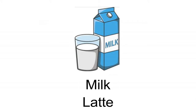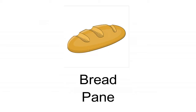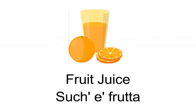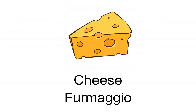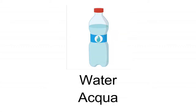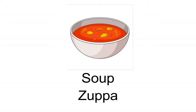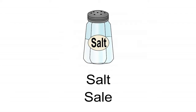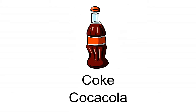General food vocabulary: Milk — Latte. Egg — Uovo. Bread — Pane. Butter — Burro. Fruit juice — Succo di frutta. Cream — Panna. Cheese — Formaggio. Ice cream — Gelato. Biscuits — Biscotti. Water — Acqua. Wine — Vino. Soup — Zuppa. Oil — Olio. Rice — Riso. Salt — Sale. Sugar — Zucchero. Coke — Coca-Cola. Fizzy pop — Rangiata.